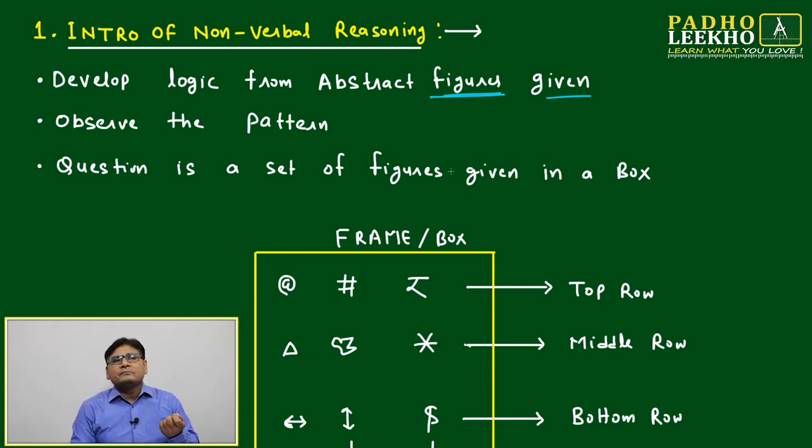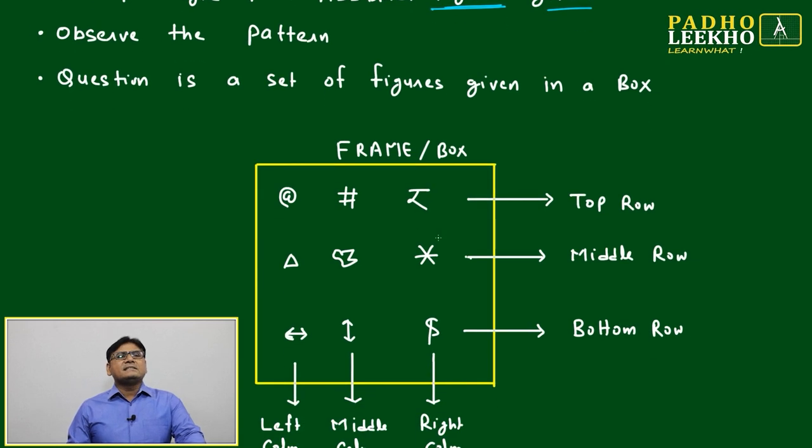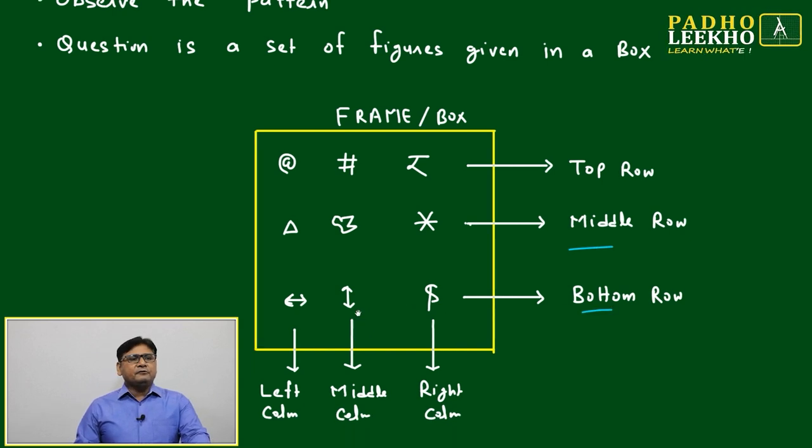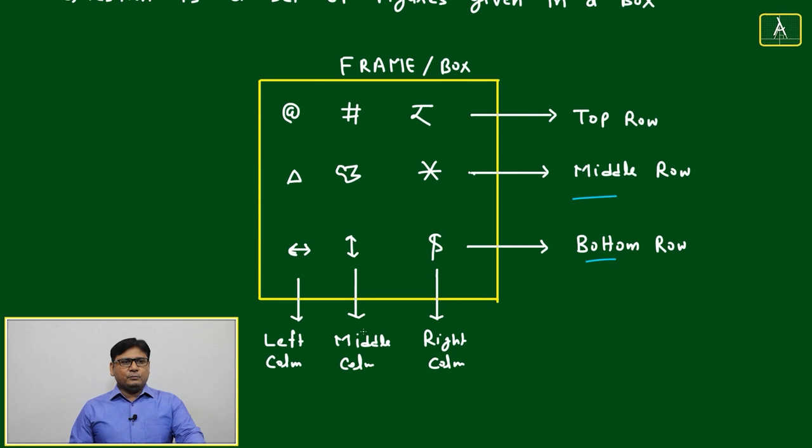That is the only crux of nonverbal reasoning. Question is a set of figures given in a box. That box is called frame, or if it is given like this, then we can say top row, middle row, and bottom row, and left column, middle column, and right column may be possible.